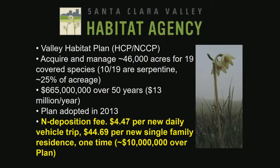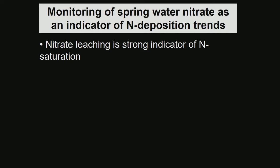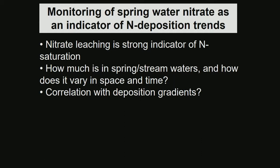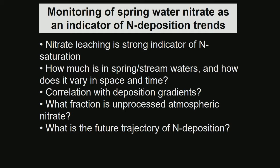That generates about $10 million over the plan. So we want to understand the long-term trends of nitrogen deposition, and the idea of monitoring spring water nitrate came up. We know nitrate leaching is a really strong indicator of nitrogen saturation. We want to know how much is in the spring and stream waters, how it varies in space and time, whether there's a correlation with deposition gradients, and what fraction is unprocessed atmospheric nitrate flushing right through the system.